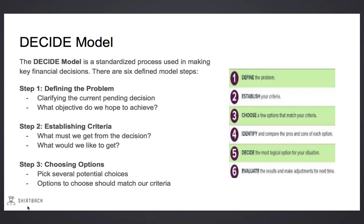Step 1 is Defining the Problem — we need to clarify what is the current decision we need to make and what objective we hope to achieve. Step 2 is Establishing Criteria — we need to determine what must we have and what would we like to have in a decision. What we must get uses prioritization; what we'd like to get involves smartly using our resources if we have the ability.